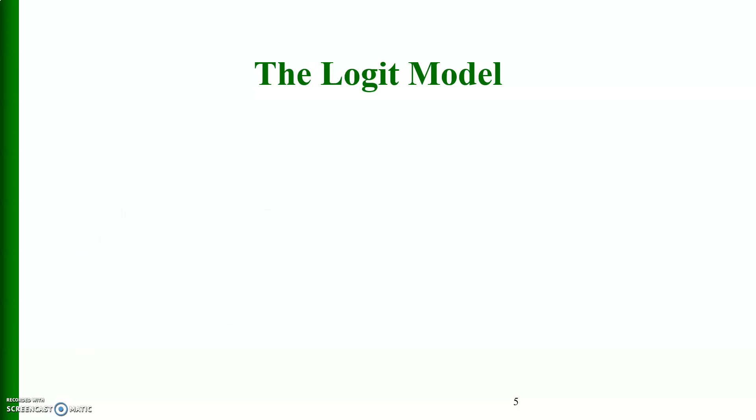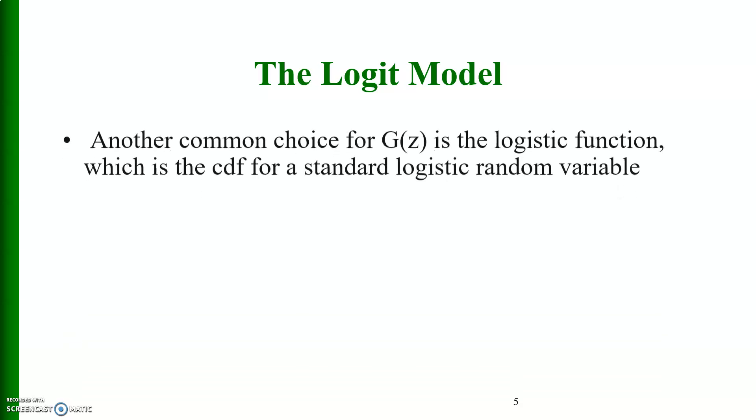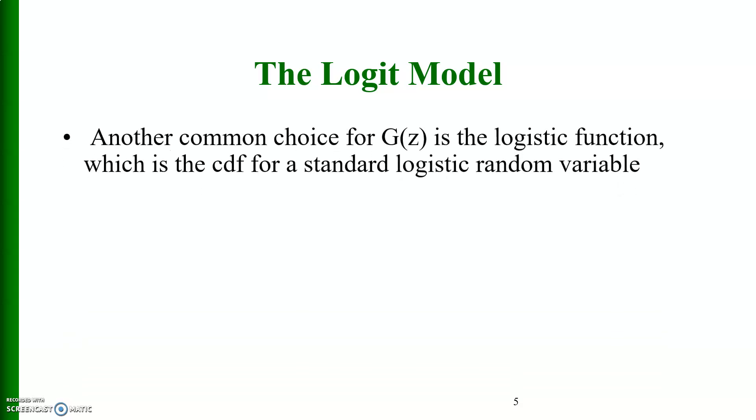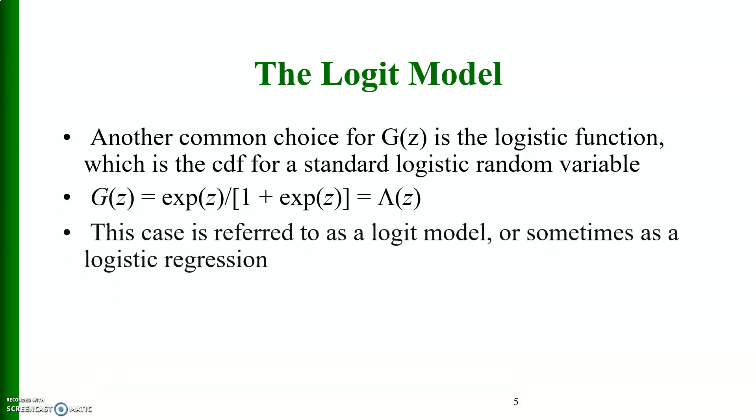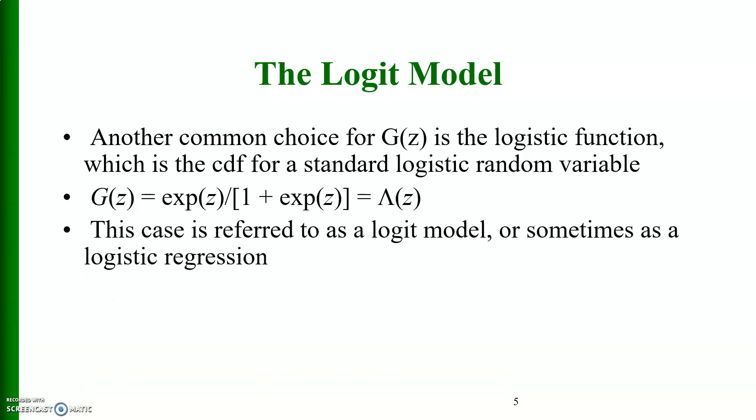An alternative to the probit model is the logit model. This is another common choice for G function of z, which has logistic function. It is a standard logistic random variable, and this is the cumulative density function for a standard logistic random variable. The function is given like this, and this case is referred to as a logit model or sometimes as a logistic regression model.